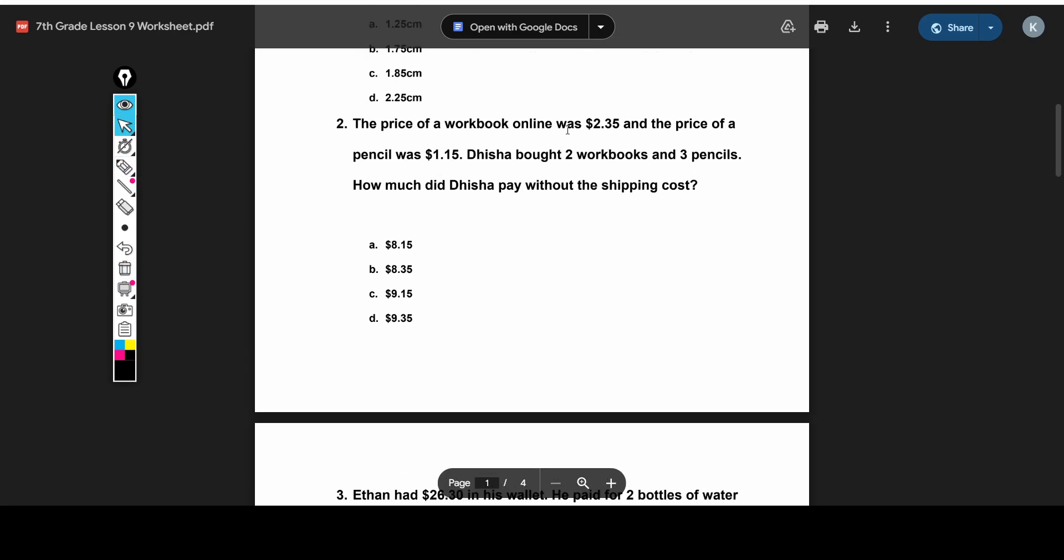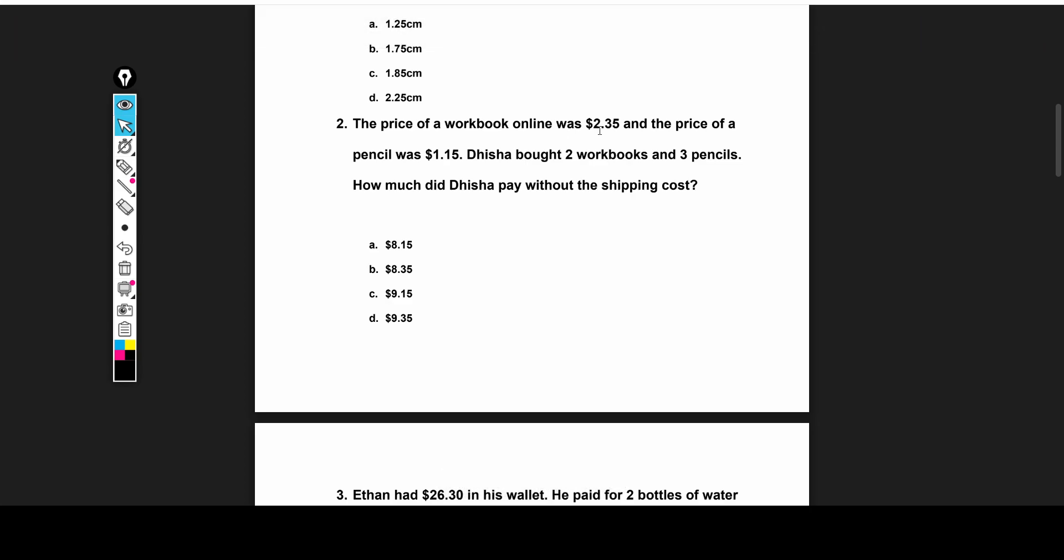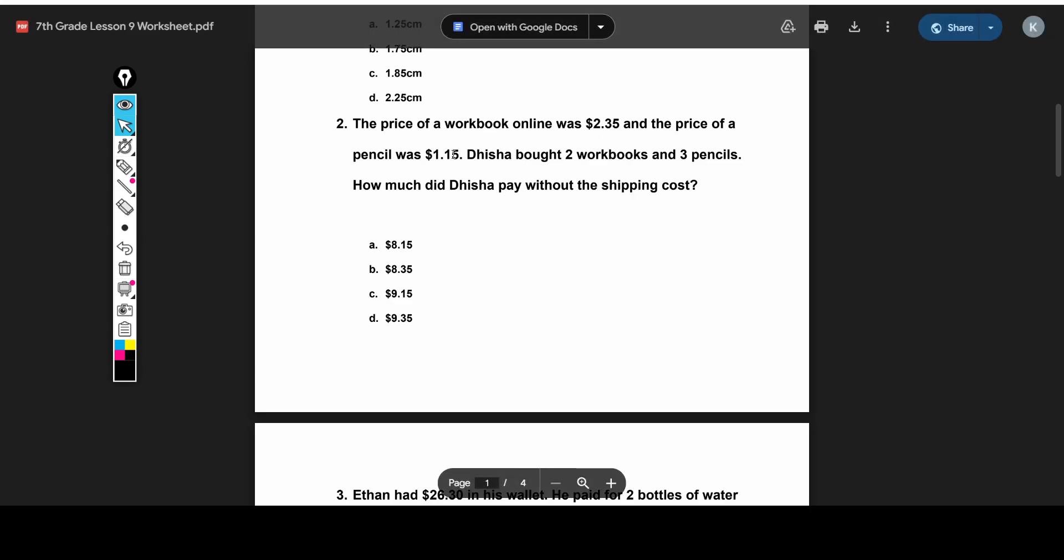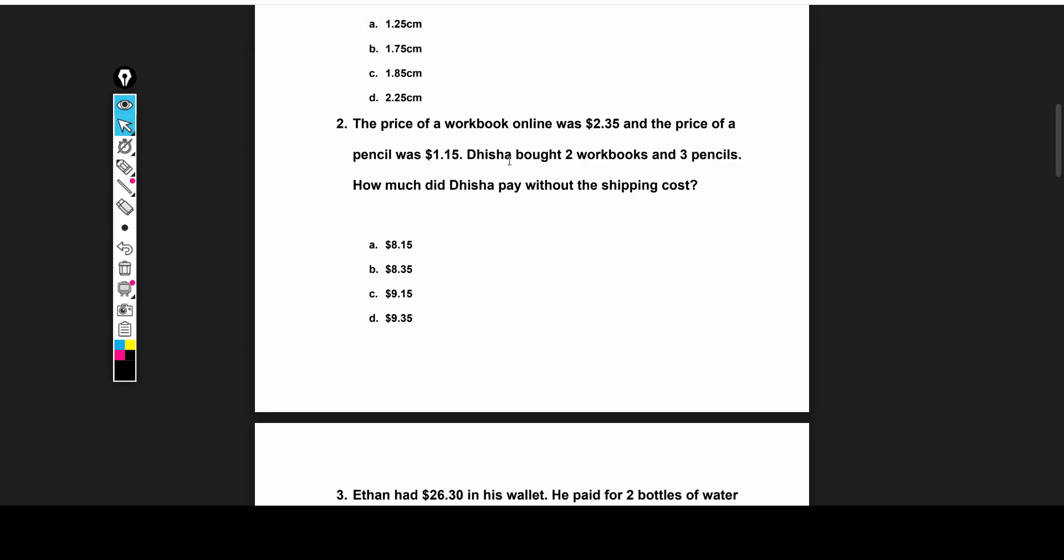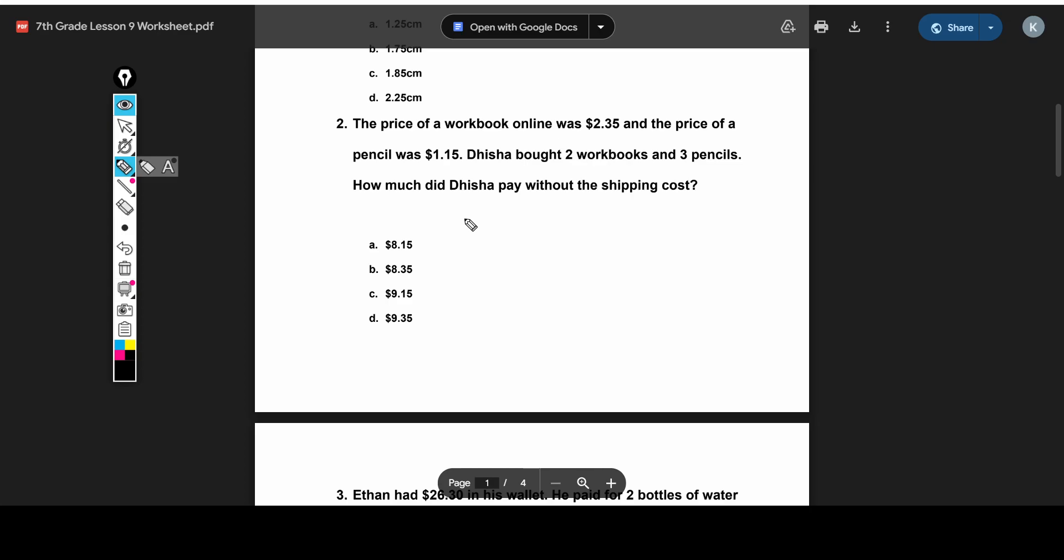For our next problem, the price of a workbook is $2.35, and the pencil is $1.15. And Disha buys two workbooks and three pencils. So we want to see how much she paid in total. That means we're going to do 2 times $2.35, because that's two workbooks, and each workbook is $2.35. And then we're going to add 3 times 1.15, since she has three pencils. And that's 3 times 1.15, because each pencil is 1.15.